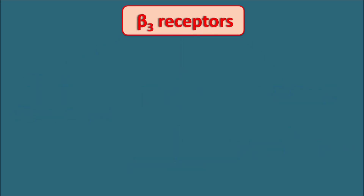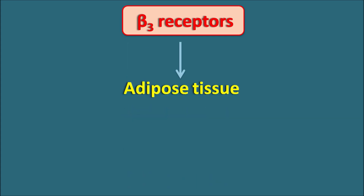Finally, beta-3 receptors. Beta-3 receptors are mainly located in adipose tissue, and since these receptors are coupled with an increase in cyclic AMP, they produce stimulation within adipose tissue, resulting in lipolysis — the breakdown of triglycerides into free fatty acids is mediated by beta-3 receptors. While beta-1 receptors are also present on adipose tissue, many fatty tissues express beta-3 receptors, which predominantly produce lipolysis.